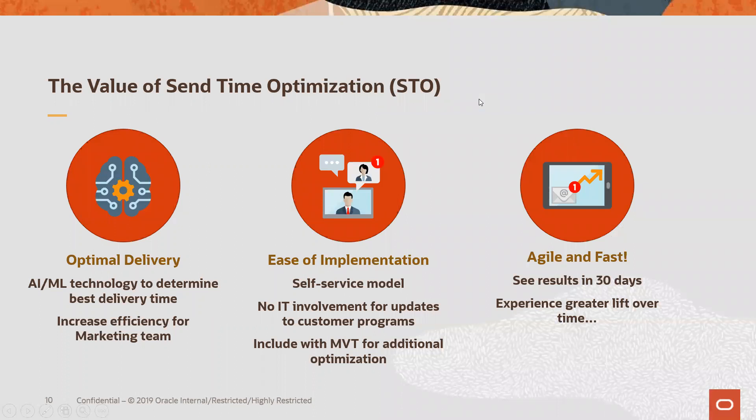The value of Send Time Optimization: you're going to get optimal deliverability with AI and machine learning technology determining that best delivery time. You'll also see increased efficiency from your marketing team — very easy to implement — which leads to the next piece of self-service. You saw that it was very easy to simply drag in the elements and set this up yourself, with no need for IT involvement. You can also include multivariate testing for additional optimization. It's agile and fast, and you'll begin seeing results in 30 days and experience greater lift over time.